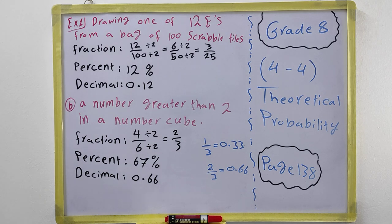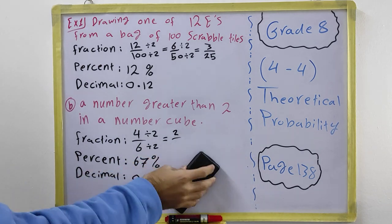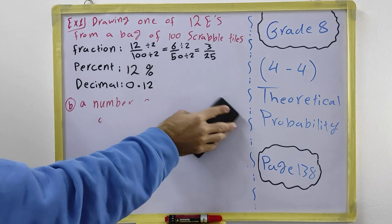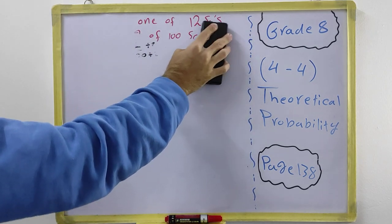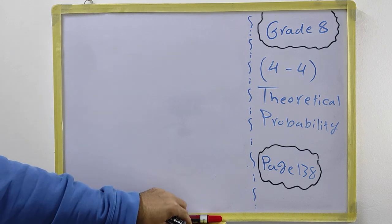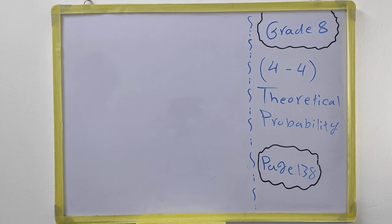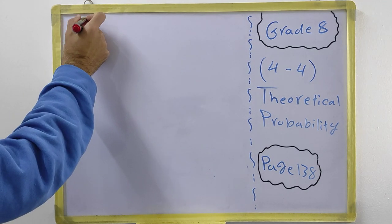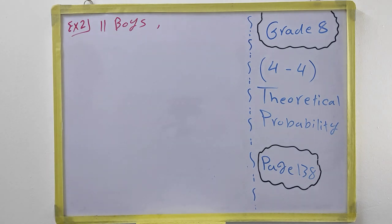For example two: we have names of boys and girls. There are 11 boys and 16 girls in a class. Mr. Cowan has written the name of each student on a craft stick and randomly draws one. We have 11 boys and 16 girls.